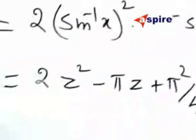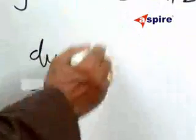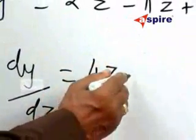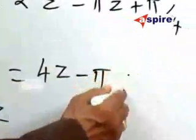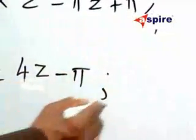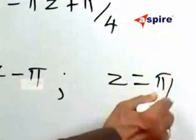Then dy by dz is equal to 4z minus π. Equating that equal to 0, z will be equal to π by 4.